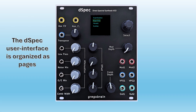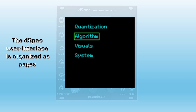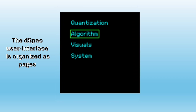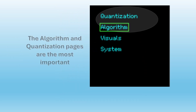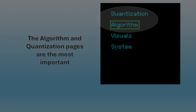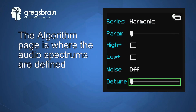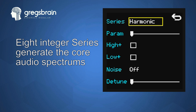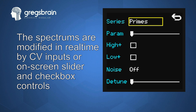The D-Spec user interface is organized as a set of pages and is navigated using the rotary encoder. The two most important pages are the algorithm page and the quantization page. The next clip is a live demonstration of the user interface.